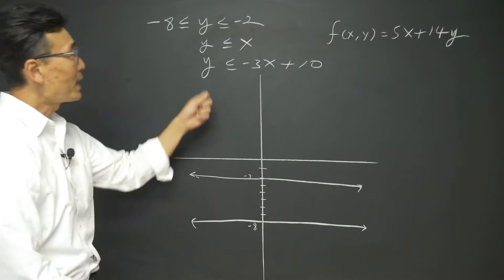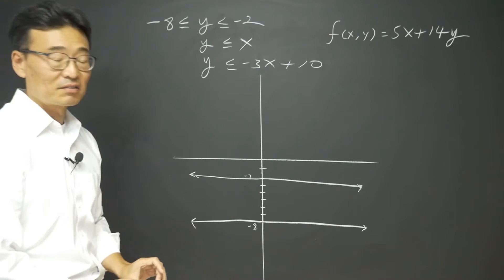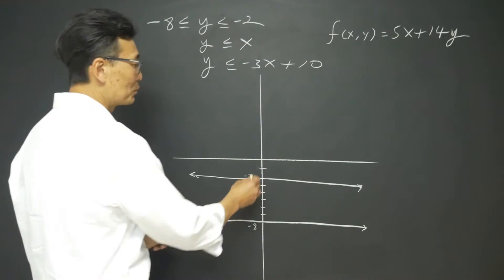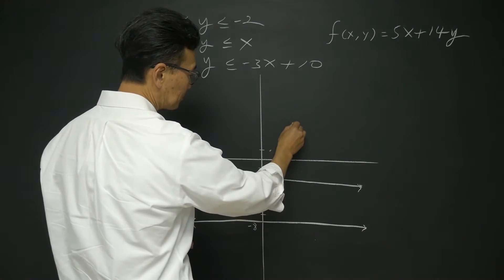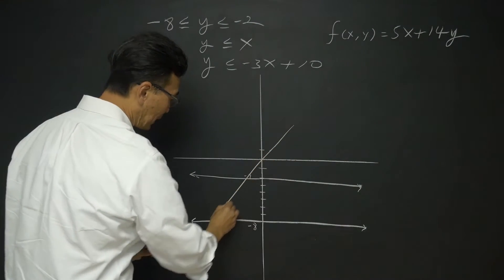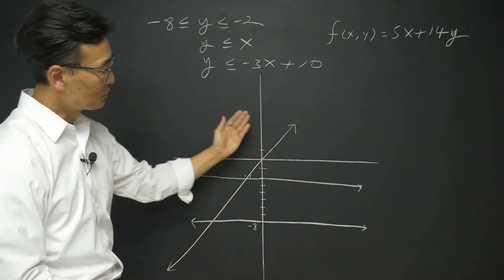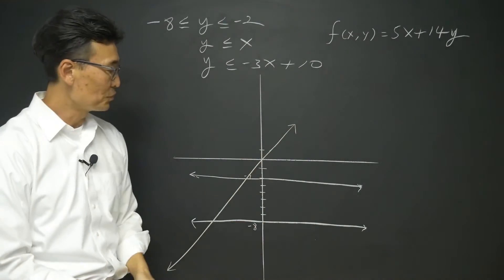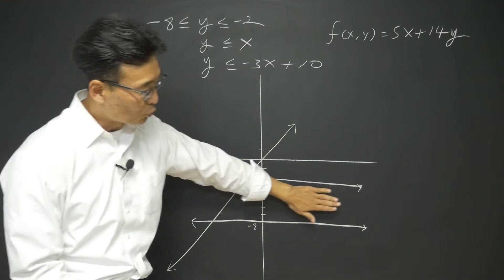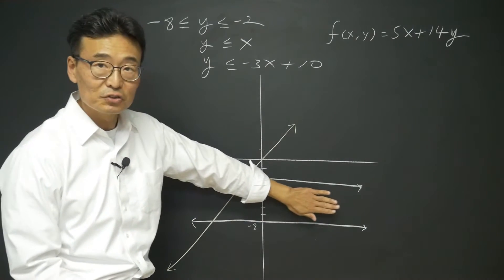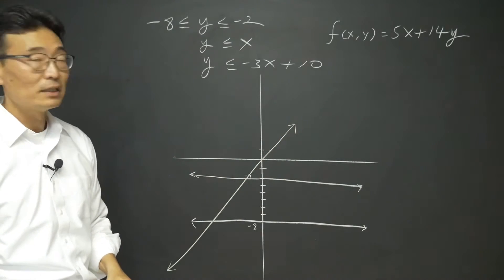Next, I'll go ahead and graph the second inequality: y is less than or equal to x. So if I graph y equals x, it's going to be less than, meaning below that line. So far the area we're looking at is between negative 2 and negative 8 and also below y equals x.